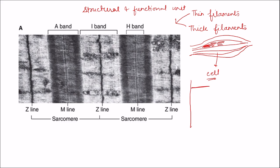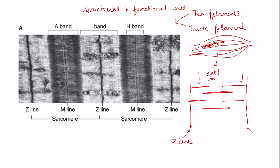The thin filament consists of three proteins: actin, tropomyosin, and troponin. Then there are thick filaments. The thin filament is attached to the Z line, which is basically a lot of proteins to which the actin filaments are attached. So the sarcomere is the portion of these proteins between two Z lines, with thin filaments on either side and the thick filament in the center.